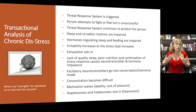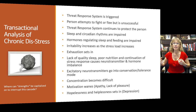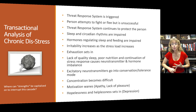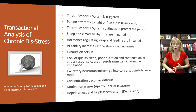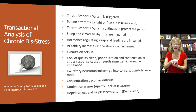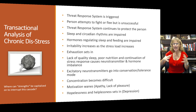Irritability increases as the stress load increases. When I start to get tired and foggy-headed because I'm not getting good quality sleep, I tend to have a much lower stress tolerance and tend to be more irritable. Exhaustion sets in. Lack of quality sleep, poor nutrition, and continuation of the stress response causes neurotransmitters and hormones to get out of balance. We know that chronic stress can lead to alterations in dopamine, norepinephrine, and serotonin levels, as well as thyroid, estrogen, and testosterone levels — and all of those hormones and neurotransmitters interact with one another.